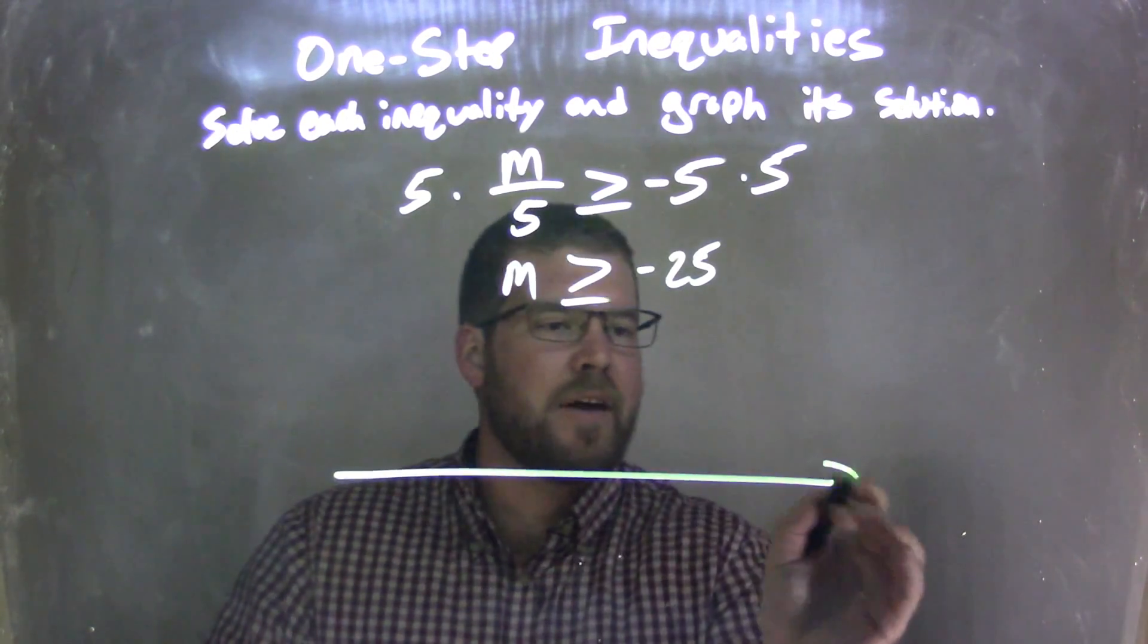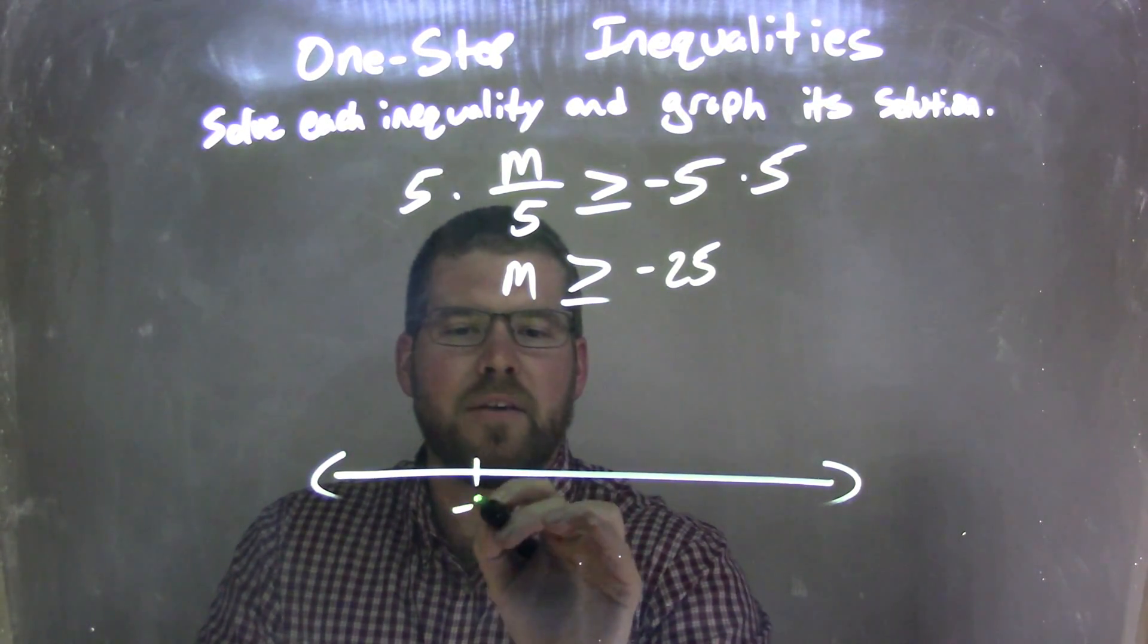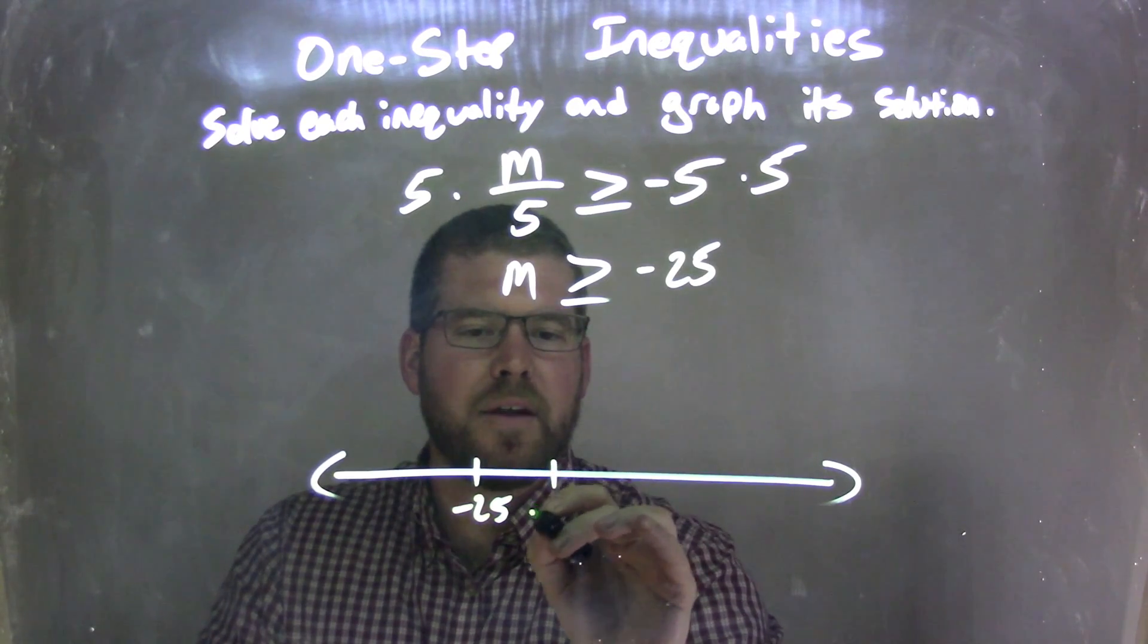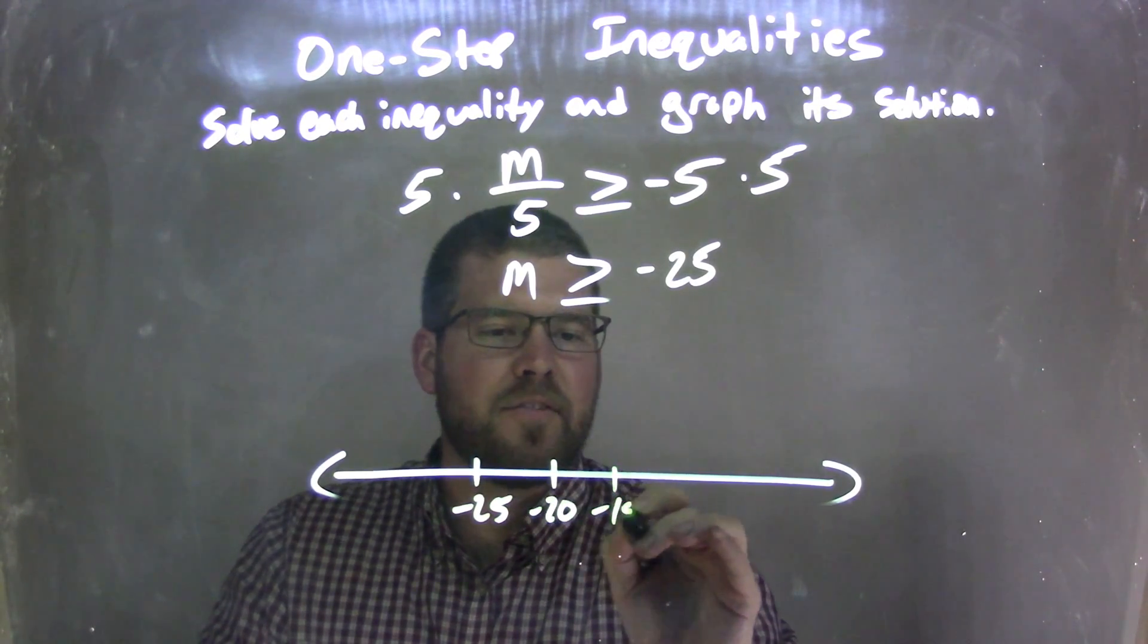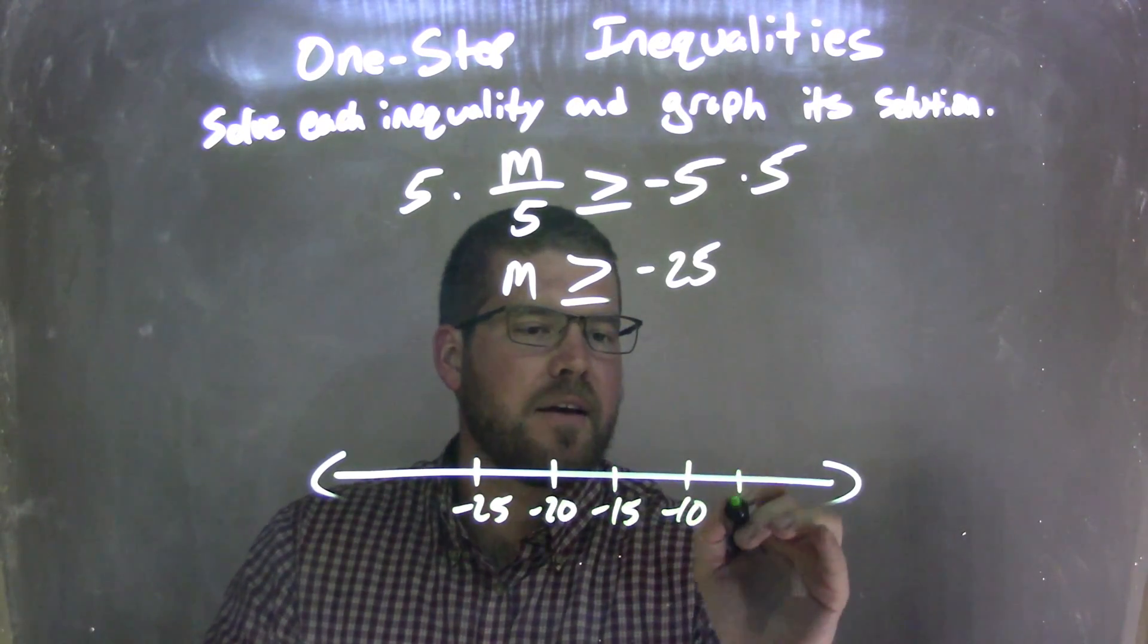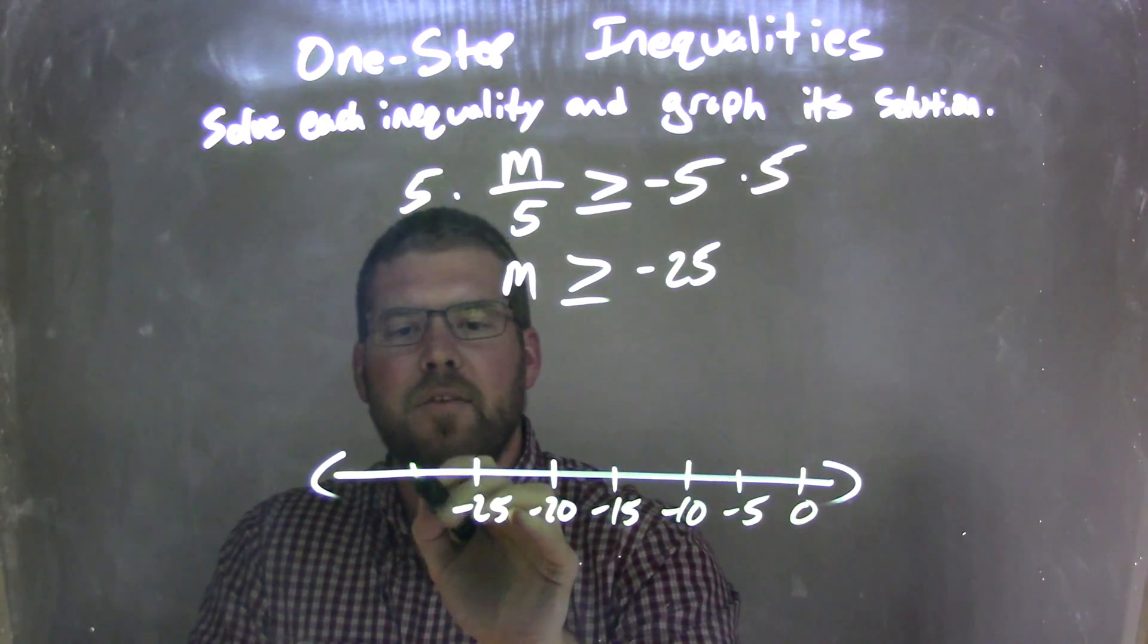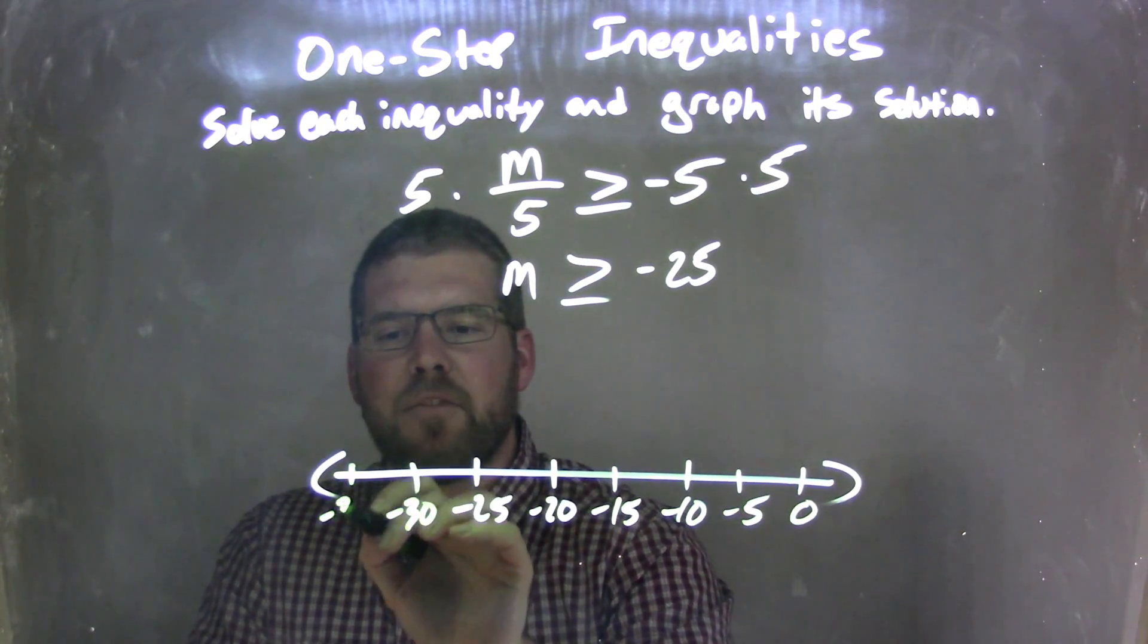So if I want to make a graph out of this, I'm going to put negative 25 here. Let's go by 5s. Negative 20, negative 15, negative 10, negative 5, 0. Now we have negative 30 here and negative 35.